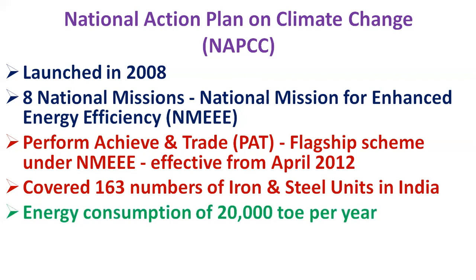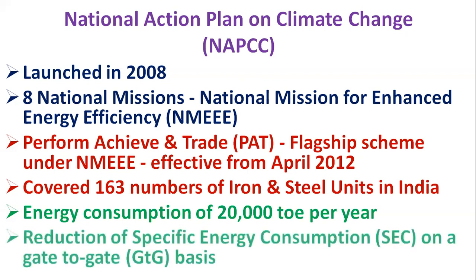The PAT scheme has so far covered 163 iron and steel units in India, referred to as designated consumers. The threshold energy consumption limit of 20,000 tons of oil equivalent per year is the cutoff criteria for a unit to be identified as a designated consumer. Targets for designated consumers are based on reduction of specific energy consumption on a gate-to-gate basis. The Indian steel industry has achieved the targets for reduction in energy consumption in PAT cycle one and cycle two.